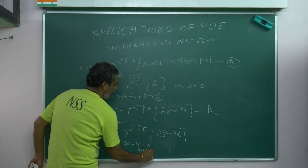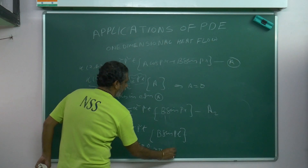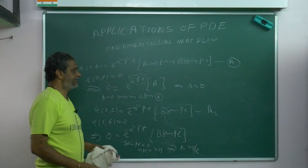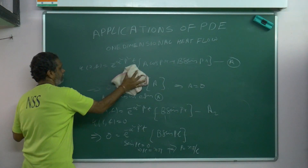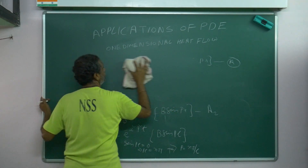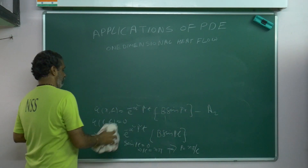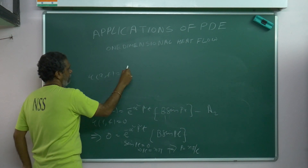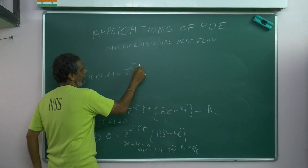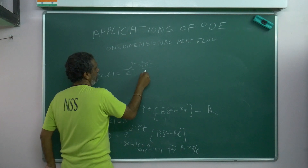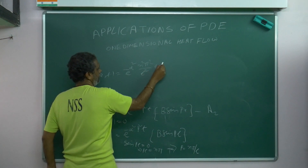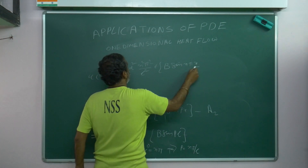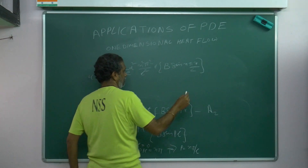From sin(pL) = 0, we understand that pL = nπ, which gives p = nπ/L. Substituting back into equation 2, we get: u(x, t) = e^(−α² · n²π²/L² · t) · B sin(nπx/L). This is equation 3.